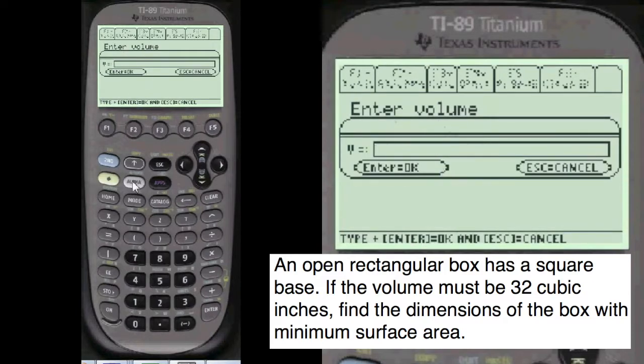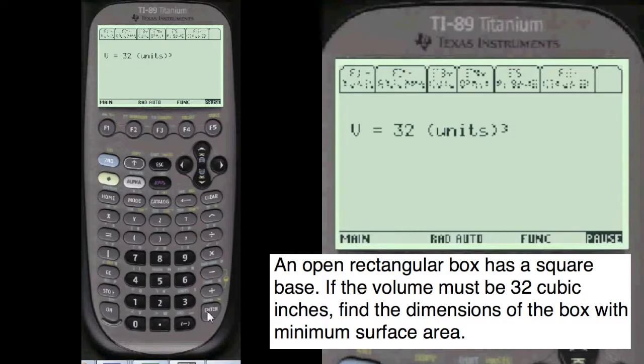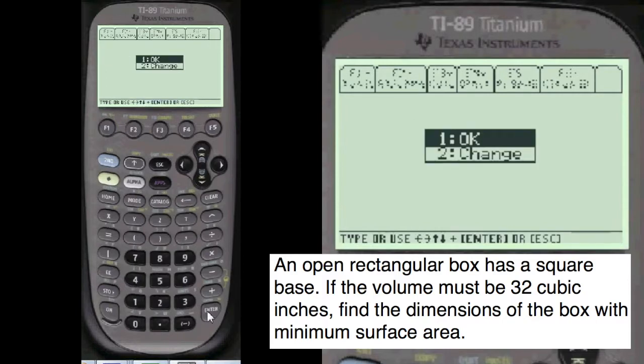You have to press alpha before you enter anything in these entry lines here. The problem is alpha. Volume is 32 cubic units. I always show you what you've entered. You can change it if you want. I say it's okay.